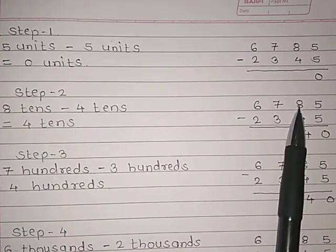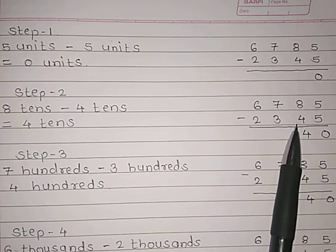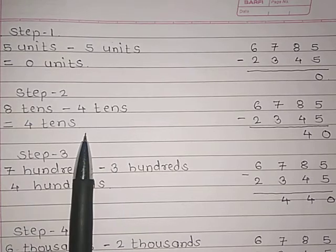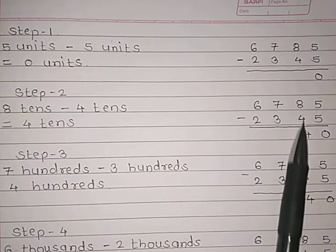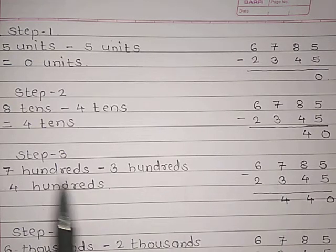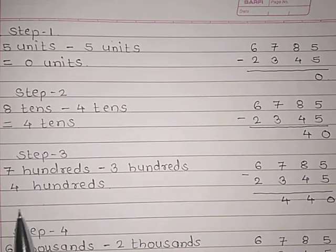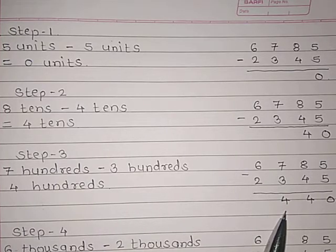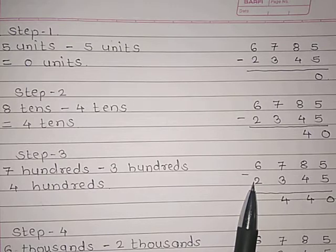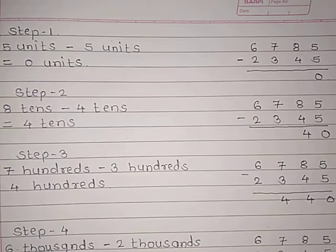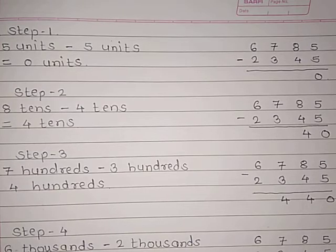Step 2: In the tens place we have 8 and 4. So 8 tens minus 4 tens equals 4 tens — we write 4. In the hundreds place we have 7 and 3. So 7 hundreds minus 3 hundreds equals 4 hundreds. In the thousands place we have 6 and 2. So 6 thousands minus 2 thousands equals 4 thousands.